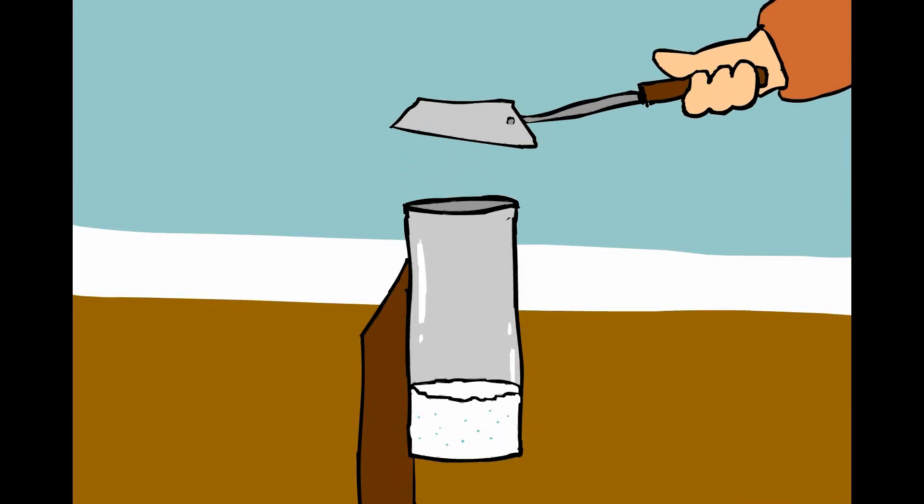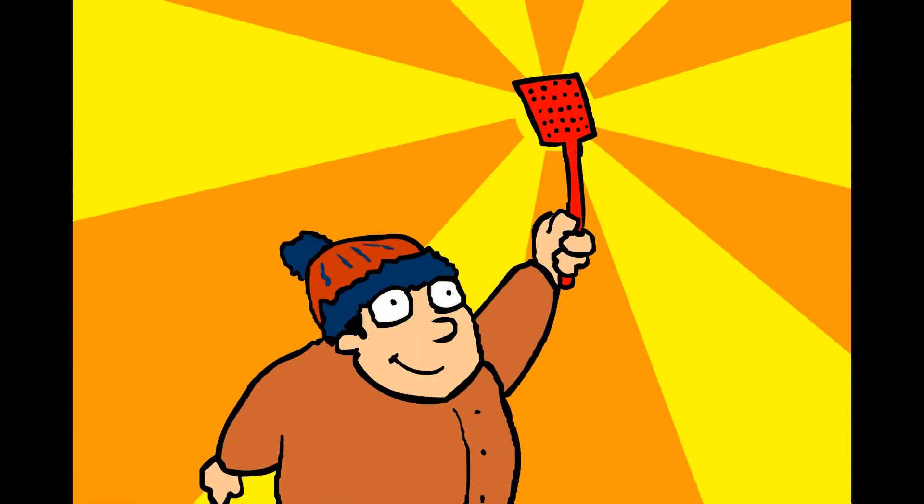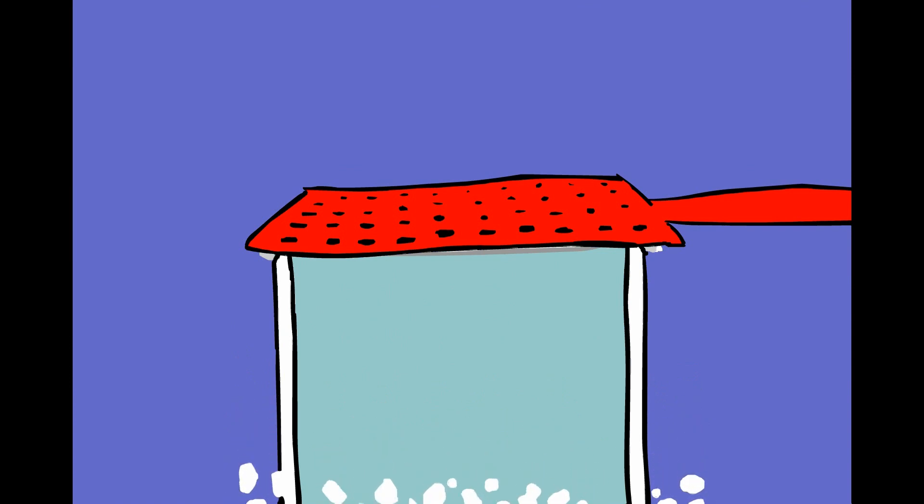Some volunteers like to use a highly advanced piece of scientific equipment for this task: a snow swatter. As you press down, some snow falls inside the gauge, and some falls out.